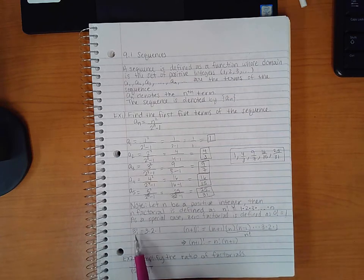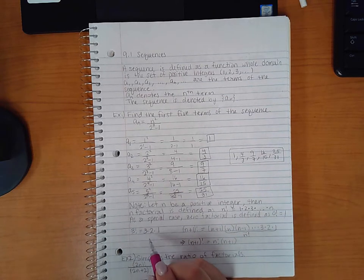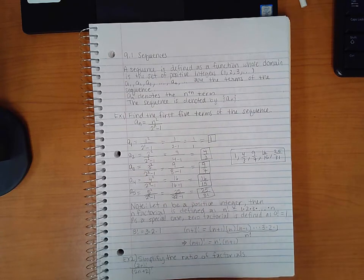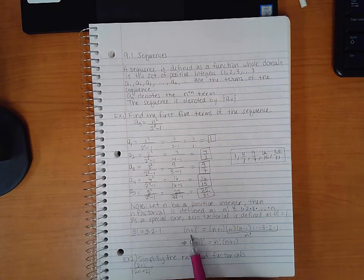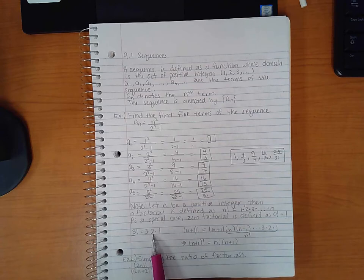This is an example, like 3 factorial means 3 times 2 times 1, or the reverse like in the definition, 1 times 2 times 3, and you stop at the n, the value you were given in the factorial. Now here's an example of something a little bit different, and it's an expression factorial. This is n plus 1. And notice how I did with 3, I wrote the n first and then started decreasing to get to 1.